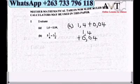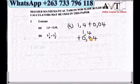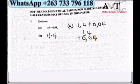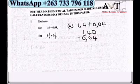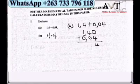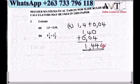Let's dive into the first question: 1.4 plus 0.04. We rearrange according to place values — tenths and hundredths. Where there is no value we put a 0. So 0 plus 4 is 4, 4 plus 0 is 4, 1 plus 0 is 1. This gives us 1.44 as our final answer.